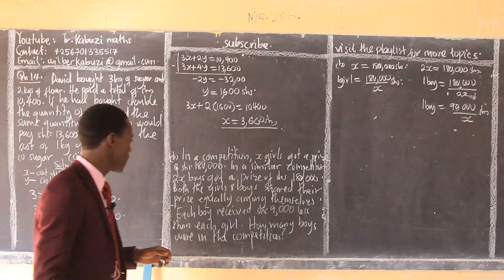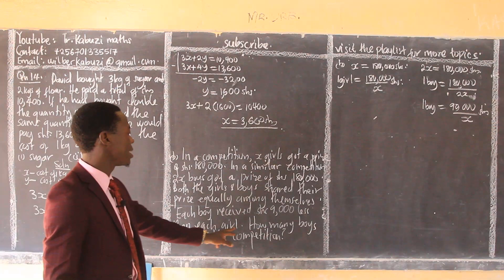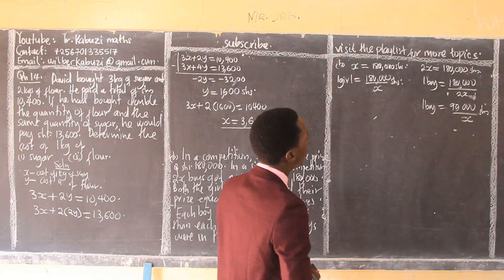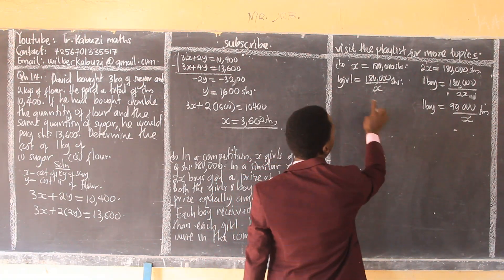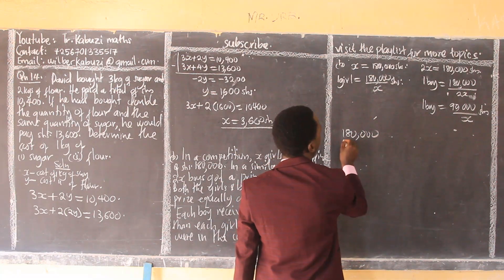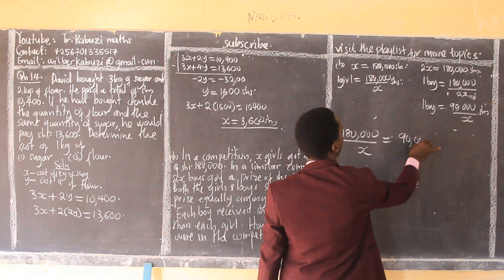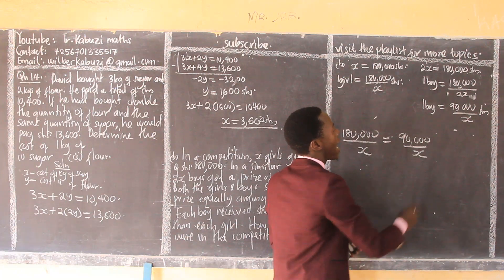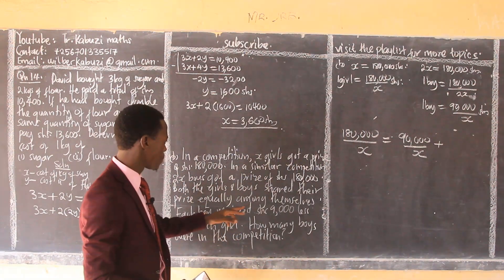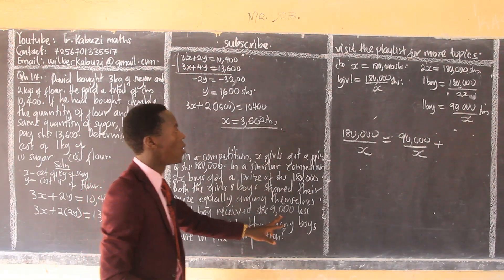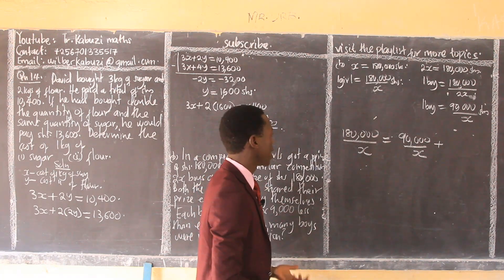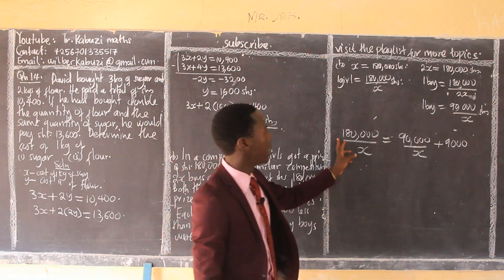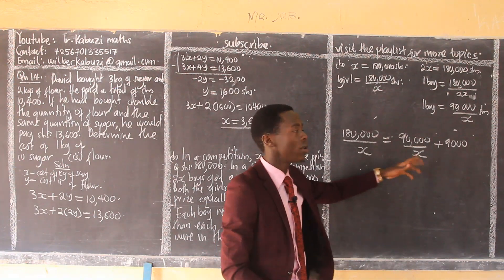Each boy received nine thousand less than each girl. So the price each girl receives divided by x equals the price each boy received plus nine thousand. To get the price each girl received, I add nine thousand to the boys' share. So: 90,000/x + 9,000 equals the price for each girl. Alternatively, the girl's price minus nine thousand gives the boy's price.